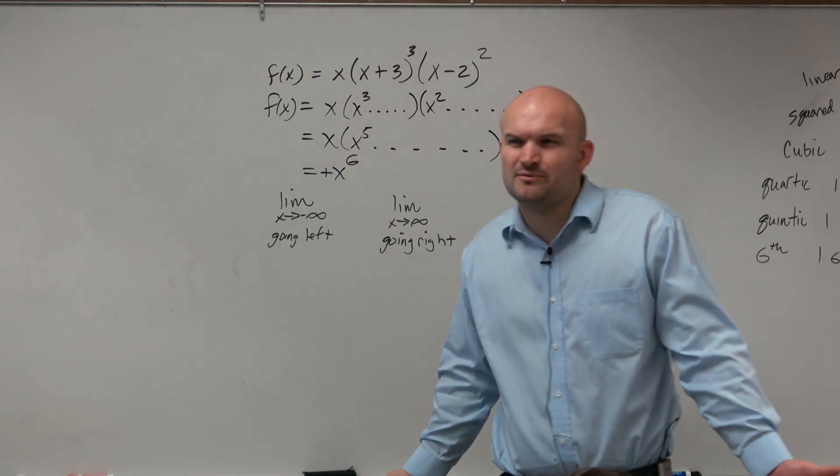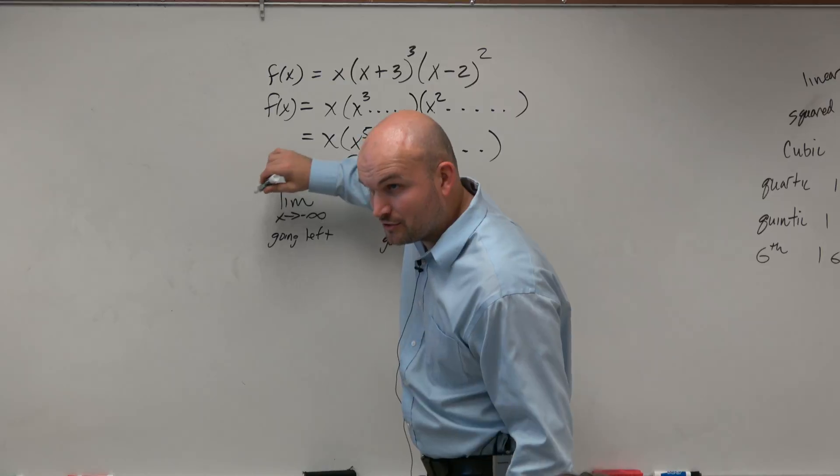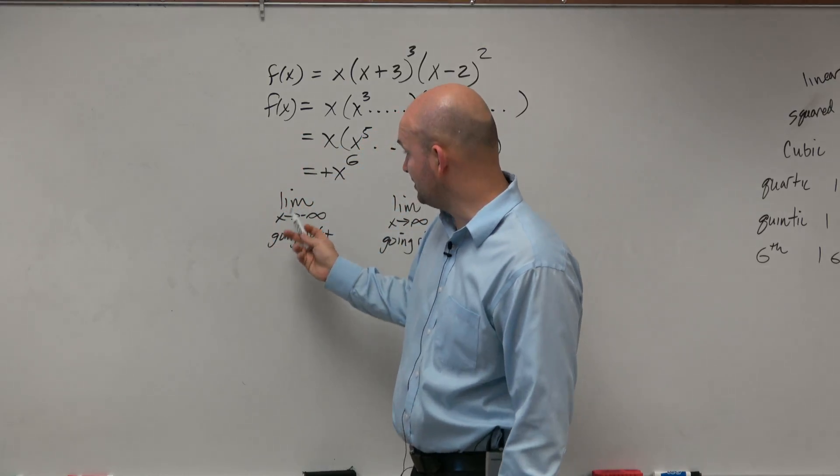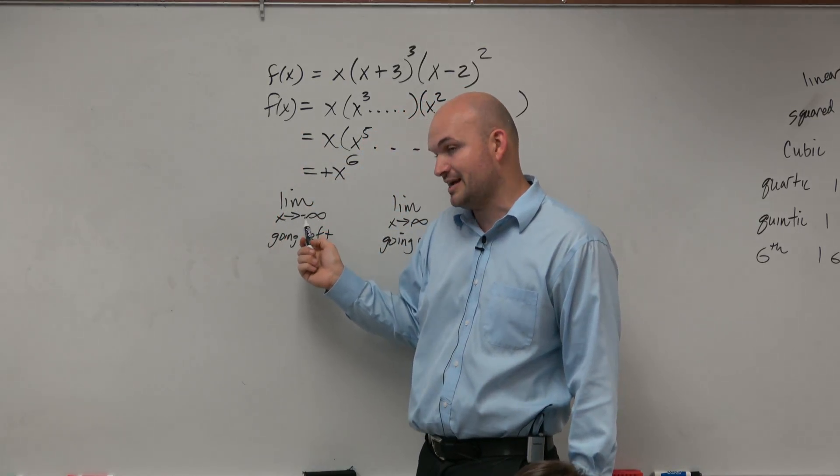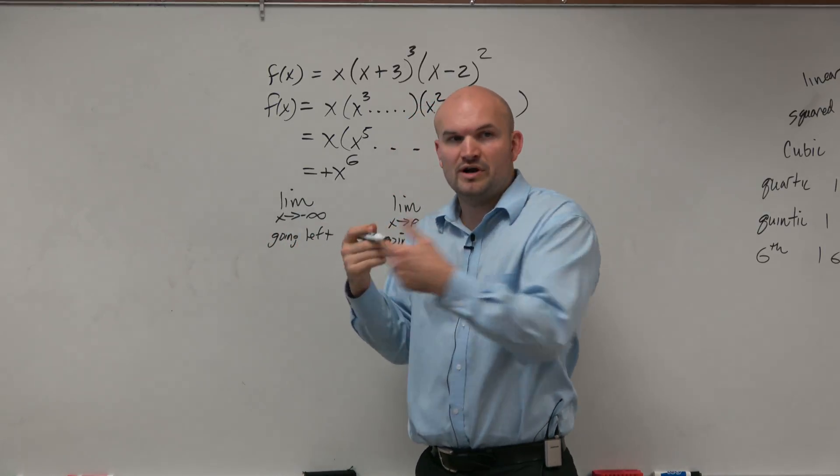And I just need to remember, so what is happening when the graph goes to the left and to the right? This is a mathematical way. Again, we'll talk more about the limits. But limits is basically as x approaches negative infinity. That means as x is going to the left, where's the function going?